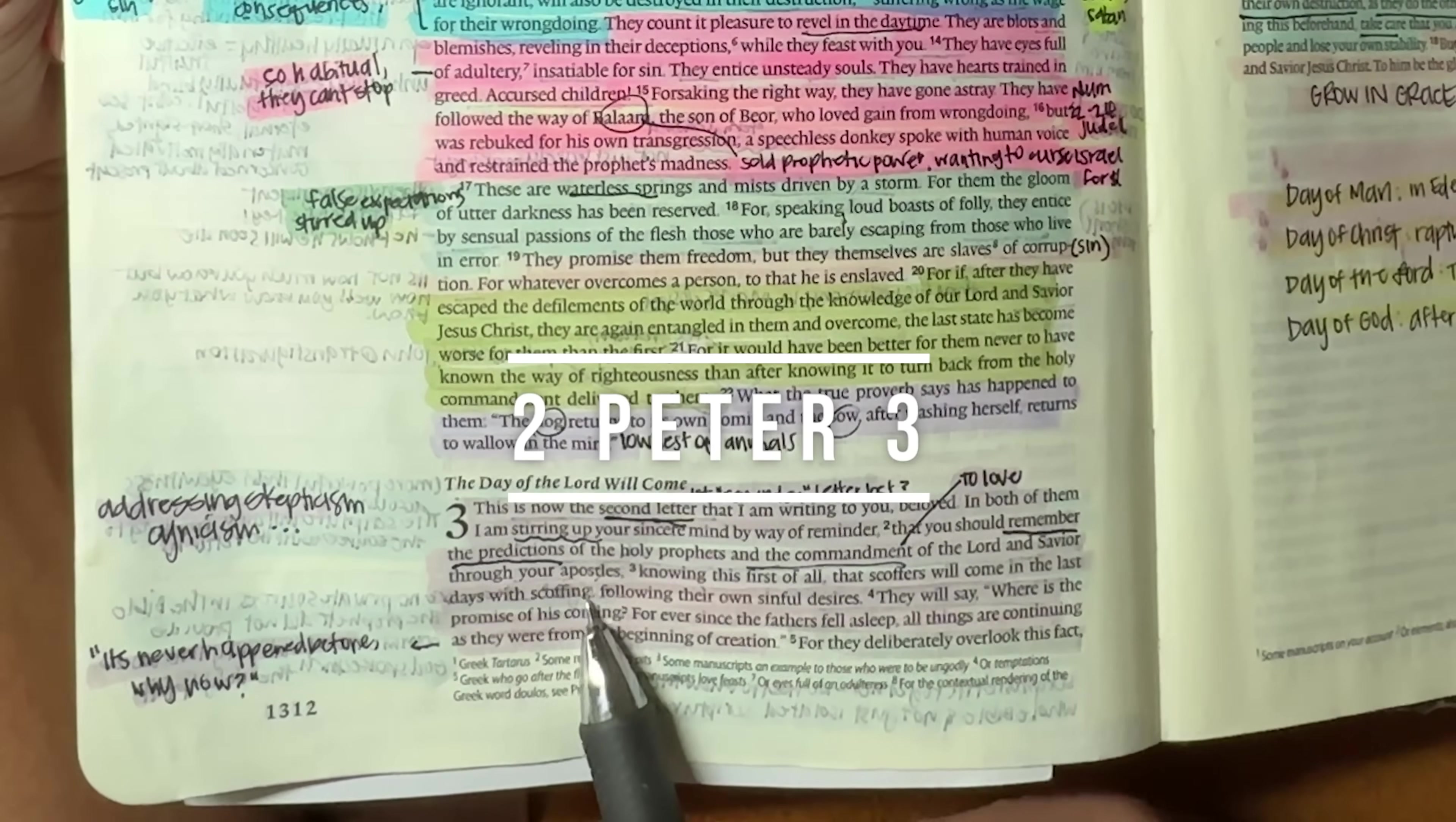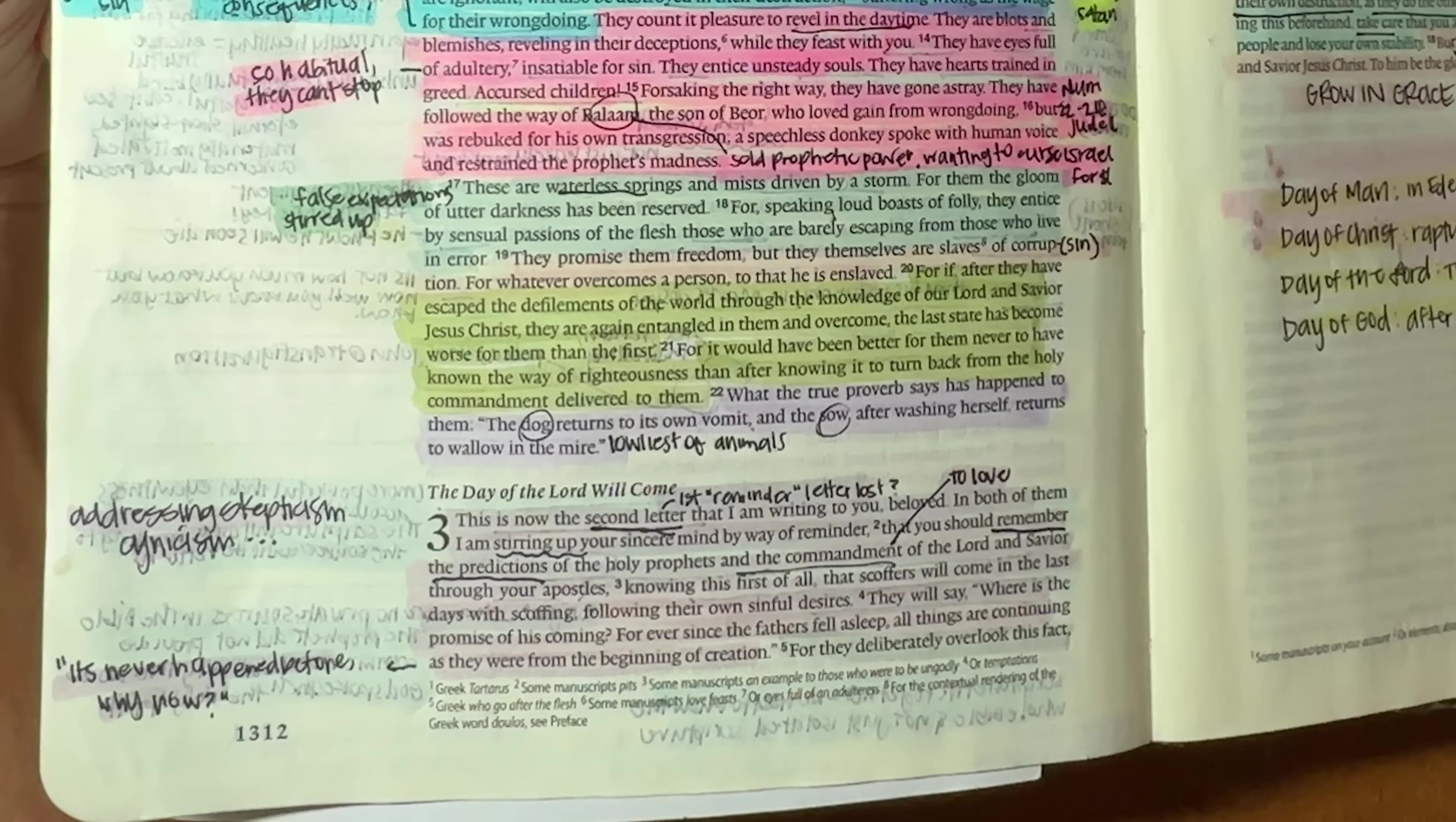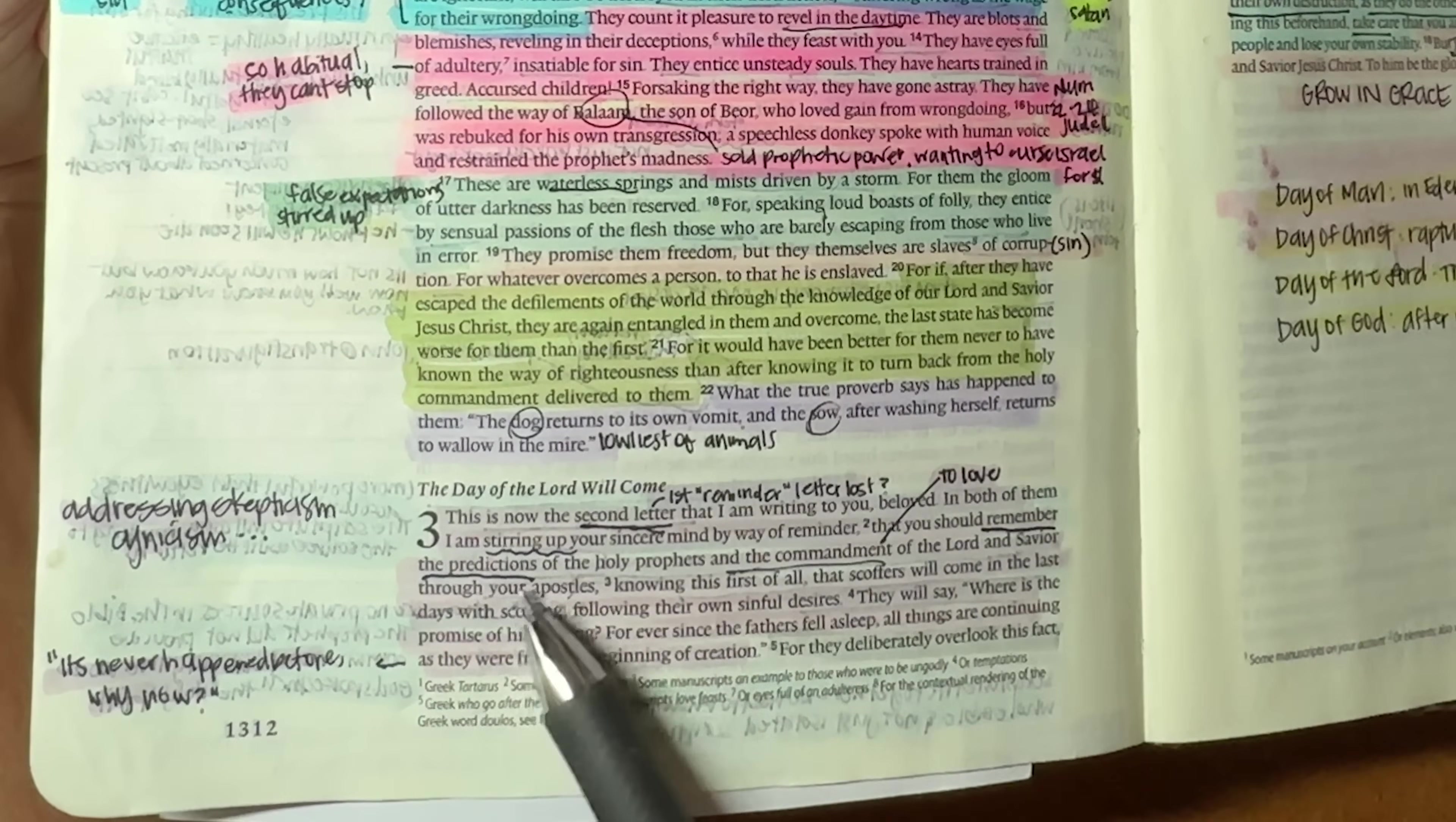Chapter three. So now he's going to address skepticism and cynicism. This is now the second letter that I am writing to you. Now, some people say, oh, of course, because it's second Peter, but actually other scholars believe that this is probably a second letter. And the first one was lost because this letter is referring to the reminders that he is giving. Whereas first Peter wasn't so much the reminder. And so they think that there was actually another letter, but regardless, this is the second letter that I'm writing to you beloved in both of them. I am stirring up your sincere mind by way of reminder that you should remember the predictions of the holy prophets and the commandment of the Lord to love one another and savior through your apostles.